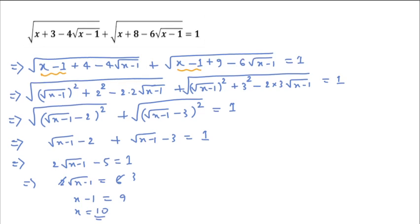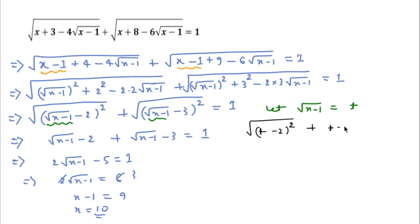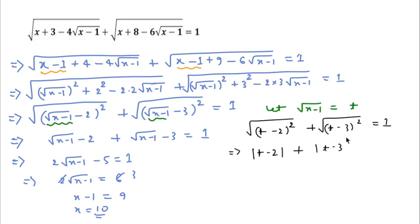I will tell you an important concept. If we let t = √(x−1), then we can write |t − 2| + |t − 3| = 1. The key point is: anything coming outside a square root must be non-negative, so we must use the modulus. Here, both (t − 2) and (t − 3) are placed inside a modulus.